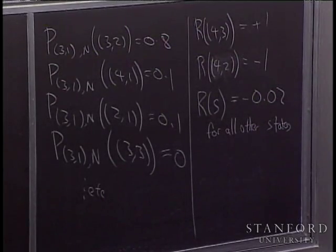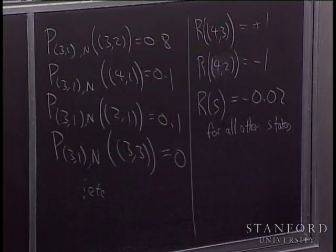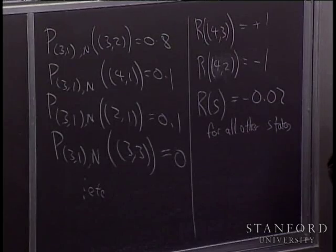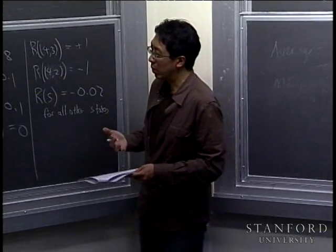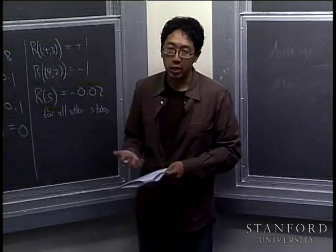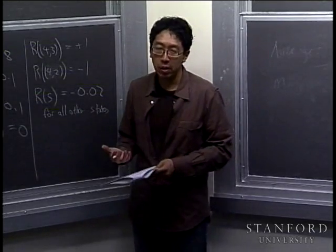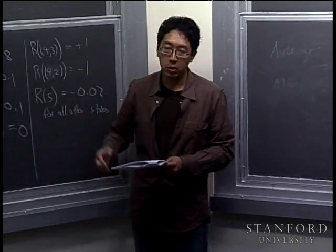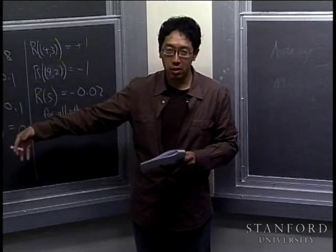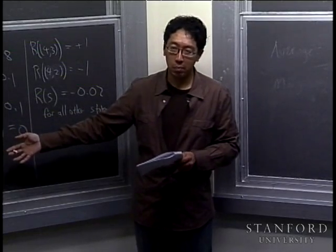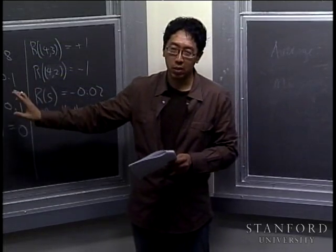There's one additional detail: I'll assume that when the robot gets to the plus-one or minus-one reward, the world ends — you get to the plus one and that's it, there are no more rewards. One way to model that is with a 12th state called a zero-cost absorbing state. Whenever you get to plus one or minus one, you transition with probability 1 to this absorbing state and stay there forever with no more rewards.